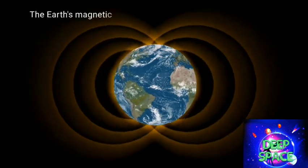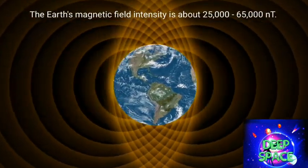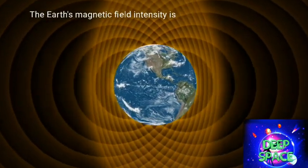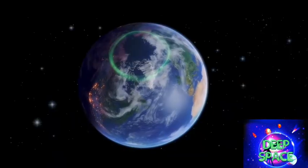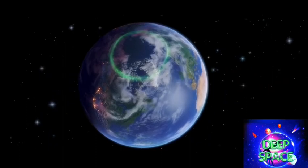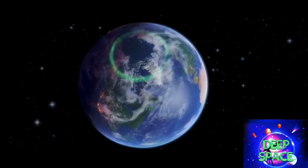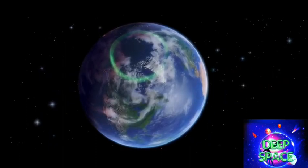Earth's magnetic field is an invisible shield around our planet that protects us from the solar wind. The shape of Earth's magnetic field causes the aurora to form two ovals over the north and south magnetic poles. This is why the northern and southern polar regions see the aurora.